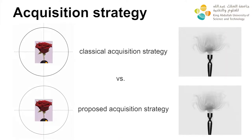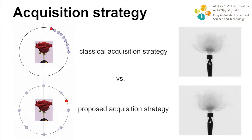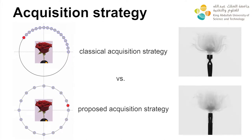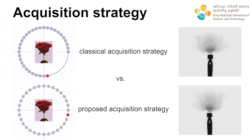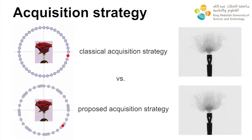Instead of using a classical scanning strategy, where the projections are taken in a linear sequence as shown on the top side, we propose a new acquisition strategy where the viewing angles are based on a low-discrepancy sequence as shown on the bottom. This strategy allows for a better distribution of the projection angles over time.